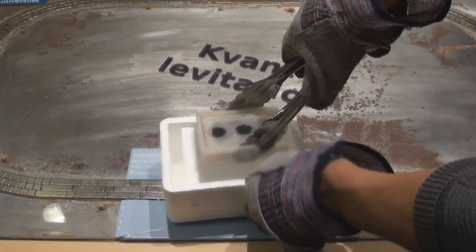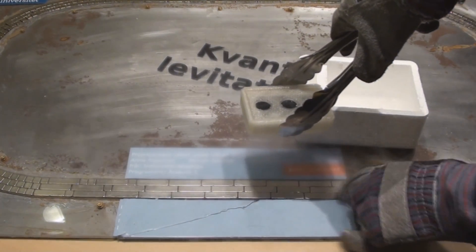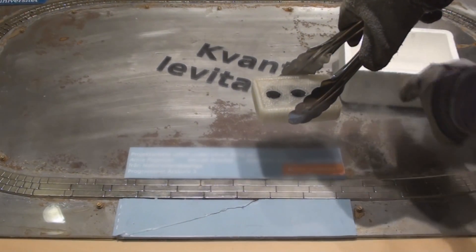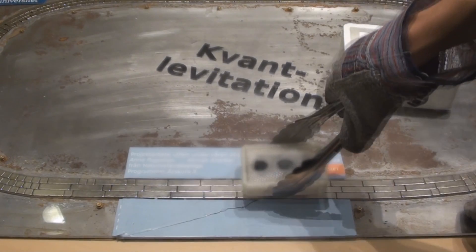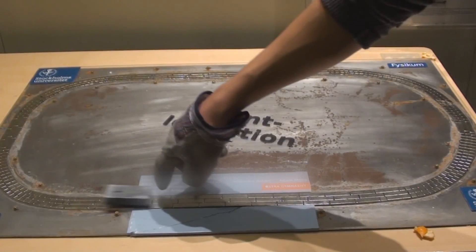As you can see the superconductor is kept in a small plastic container when taken out of the nitrogen bath. This box holds some liquid nitrogen to keep the material sufficiently cold and superconducting. This is necessary for us to be able to demonstrate things that take over 15 seconds.